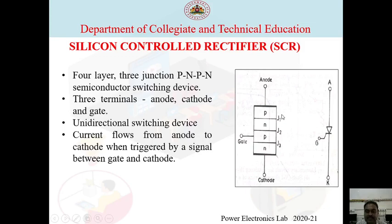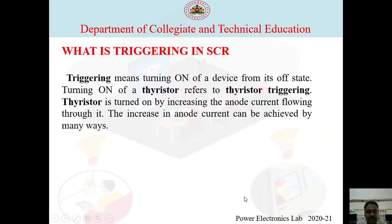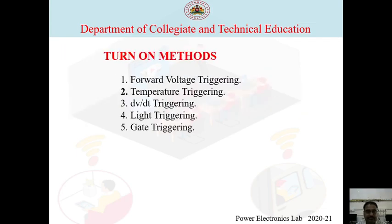SCR is a unidirectional device and once the device starts conducting, current flows from anode to cathode. Triggering in SCR means turning on of a device from its off state. This is also called firing. Turning on of a thyristor refers to thyristor triggering. The thyristor is turned on by increasing the anode current flowing through it, which can be achieved by many ways.